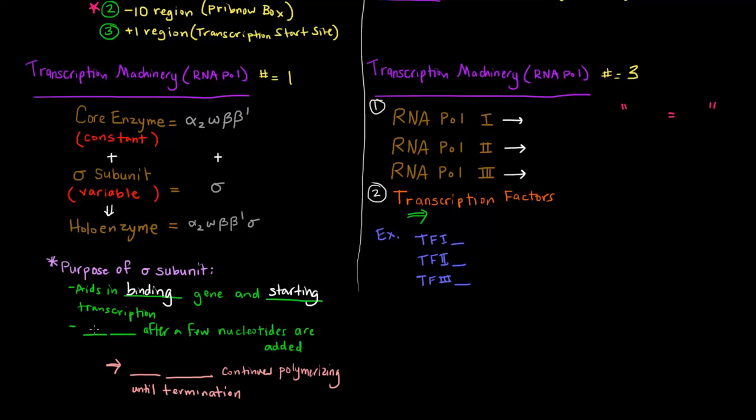So once a few nucleotides are added, the sigma subunit hops off. It leaves. And what's left is the core enzyme. So the core enzyme will then continue polymerizing until termination. So the core enzyme and the sigma subunit make up the holoenzyme. That whole thing is called the RNA polymerase.